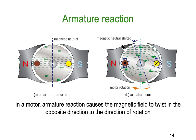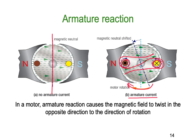Armature reaction — we've spoken about this before particularly with generators, but you also get armature reaction in motors. In a motor, armature reaction causes the magnetic field to twist in the opposite direction to rotation. As the motor rotates clockwise, the armature conductors create their own magnetic fields which oppose the main field, producing this distortion in a figure-eight shape. So instead of the field sitting in the middle, it gets shifted off at a funny angle.